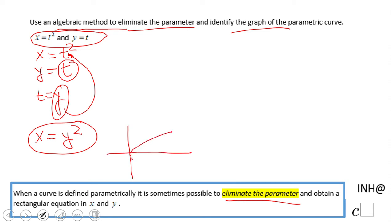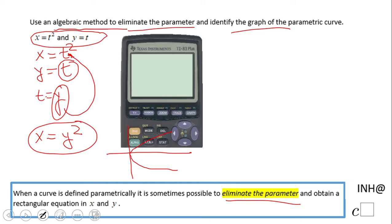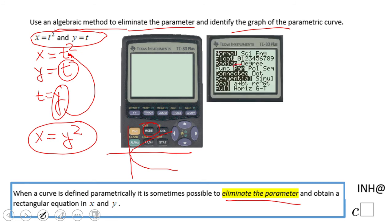Now let's take a look at the graphing calculator. If you need to use a graphing calculator under parametric mode, don't forget to change it. Click the mode button and choose parametric mode.